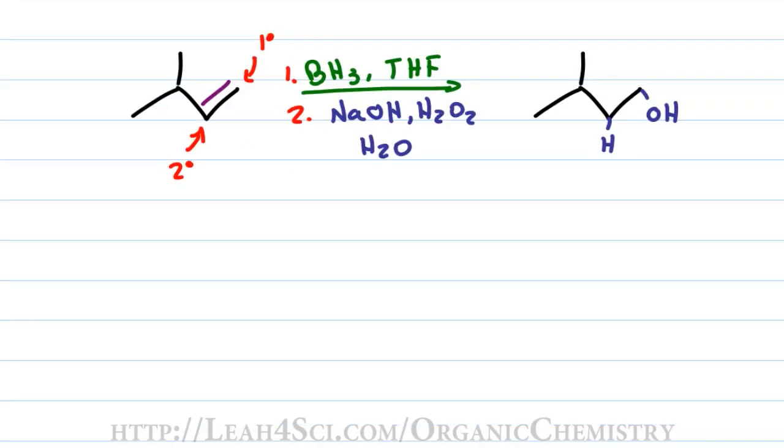Before we go into the mechanism, let's talk about boron. Boron is one of those exceptions to the octet rule where it's perfectly happy having a total of six rather than eight electrons in its valence shell. Here we have BH3 with three hydrogens and therefore six electrons, giving me an sp2 hybridized boron with an empty p-orbital.